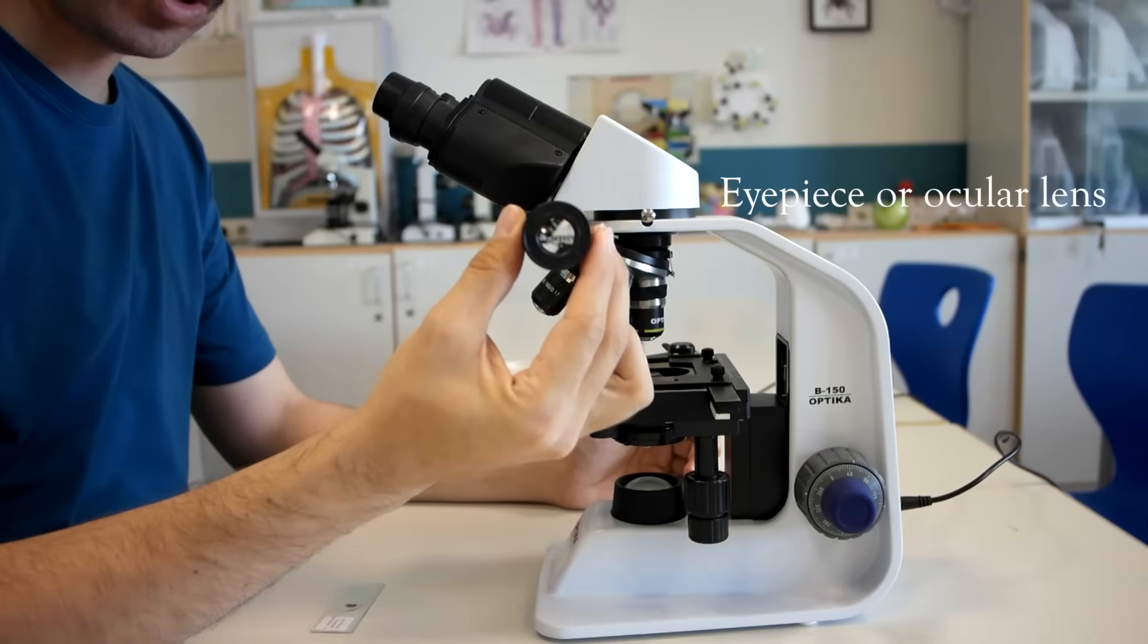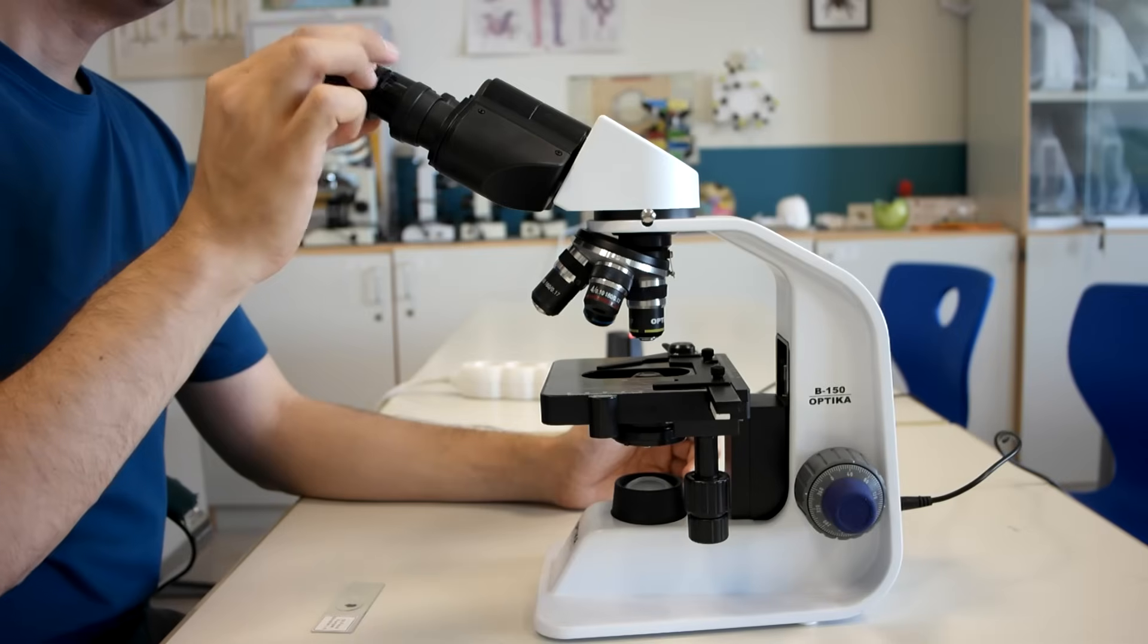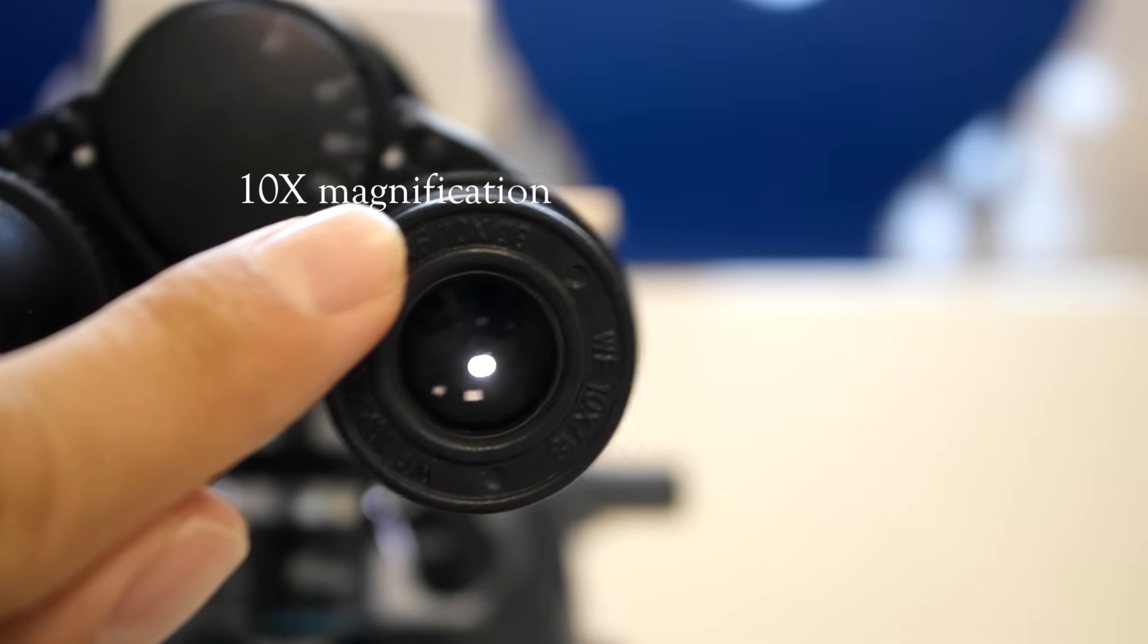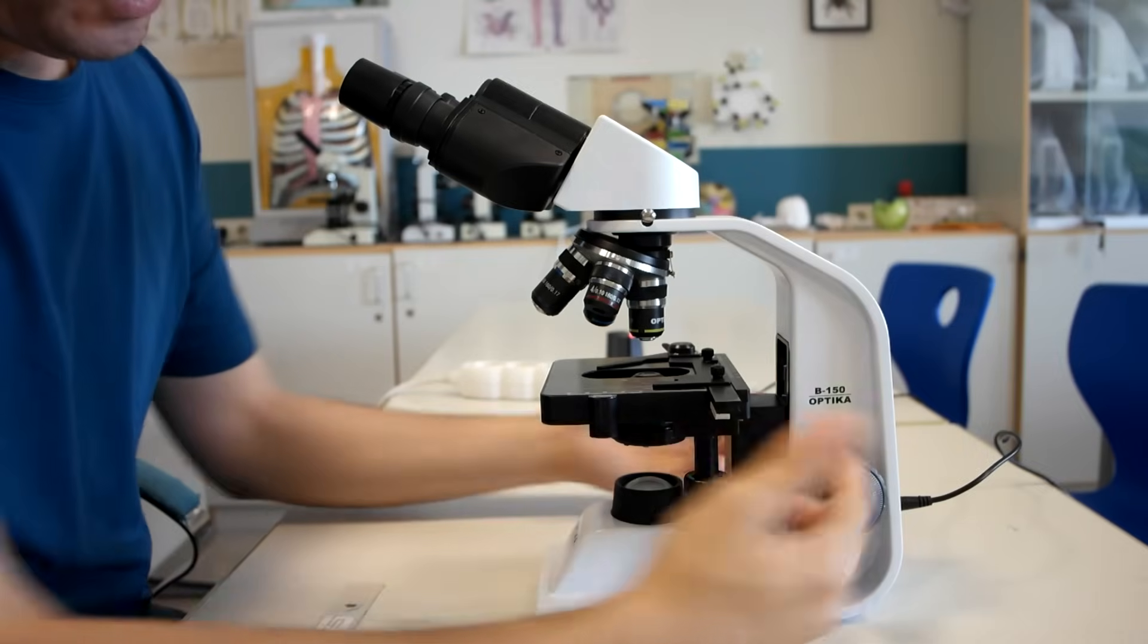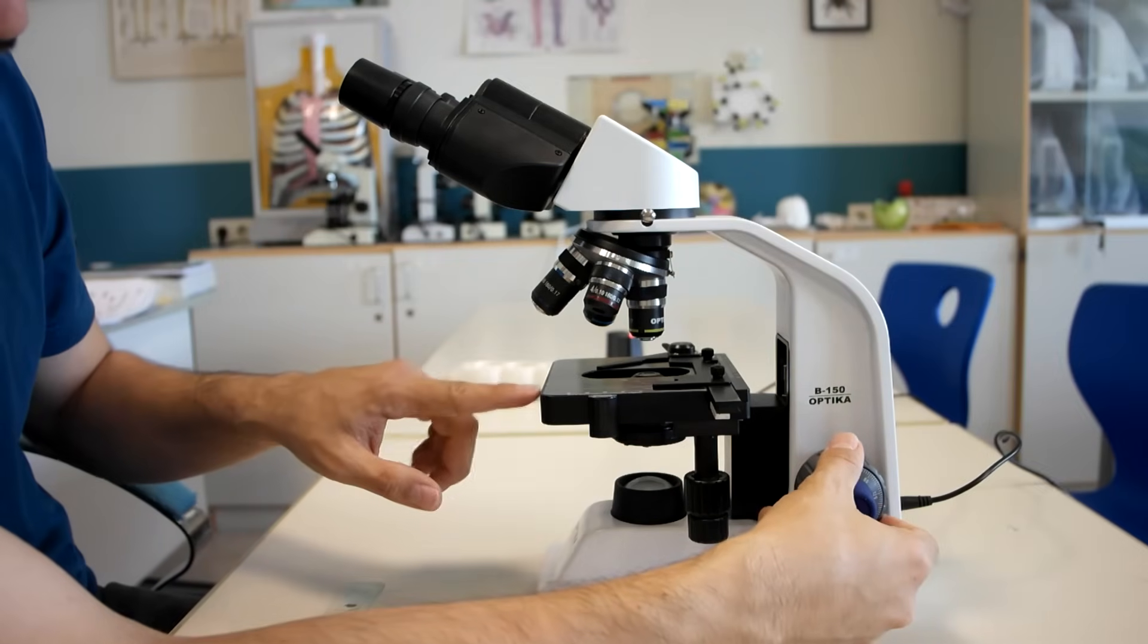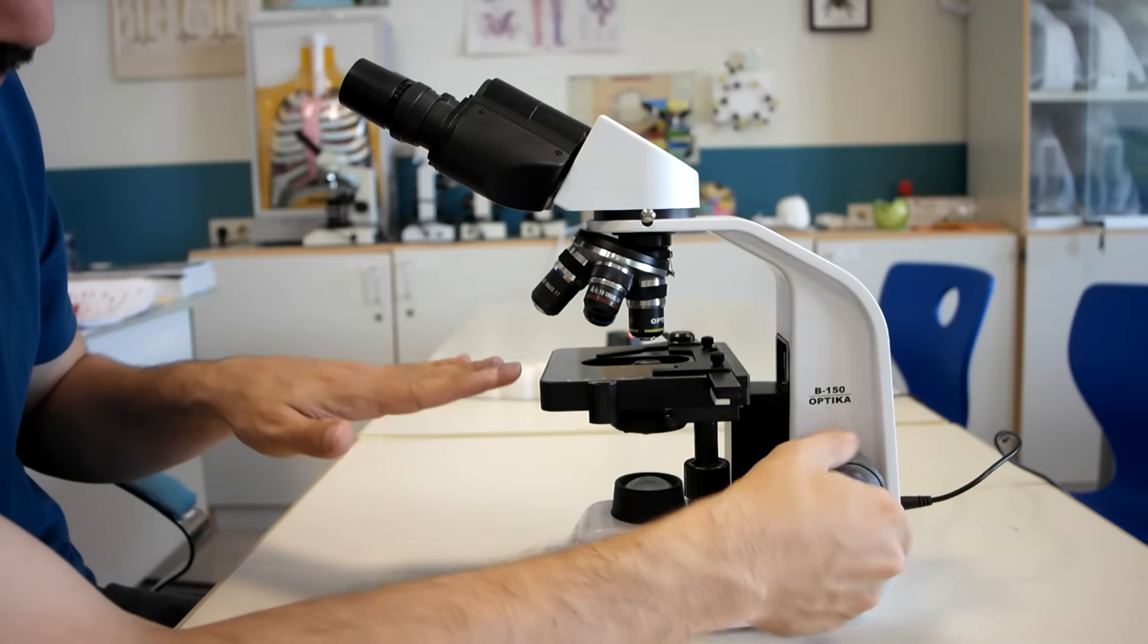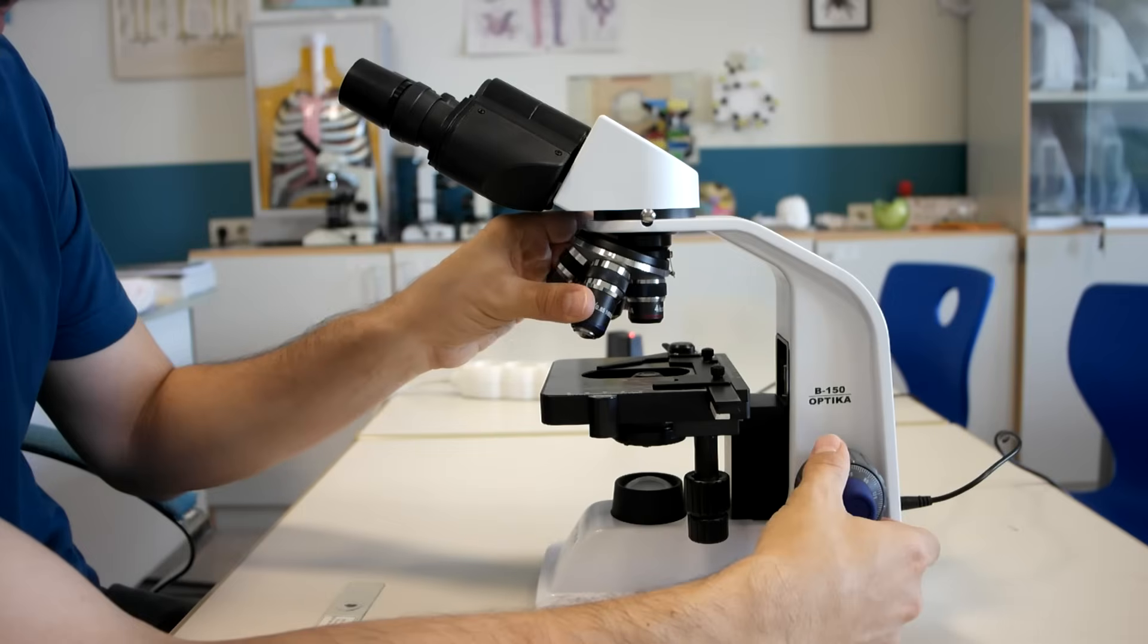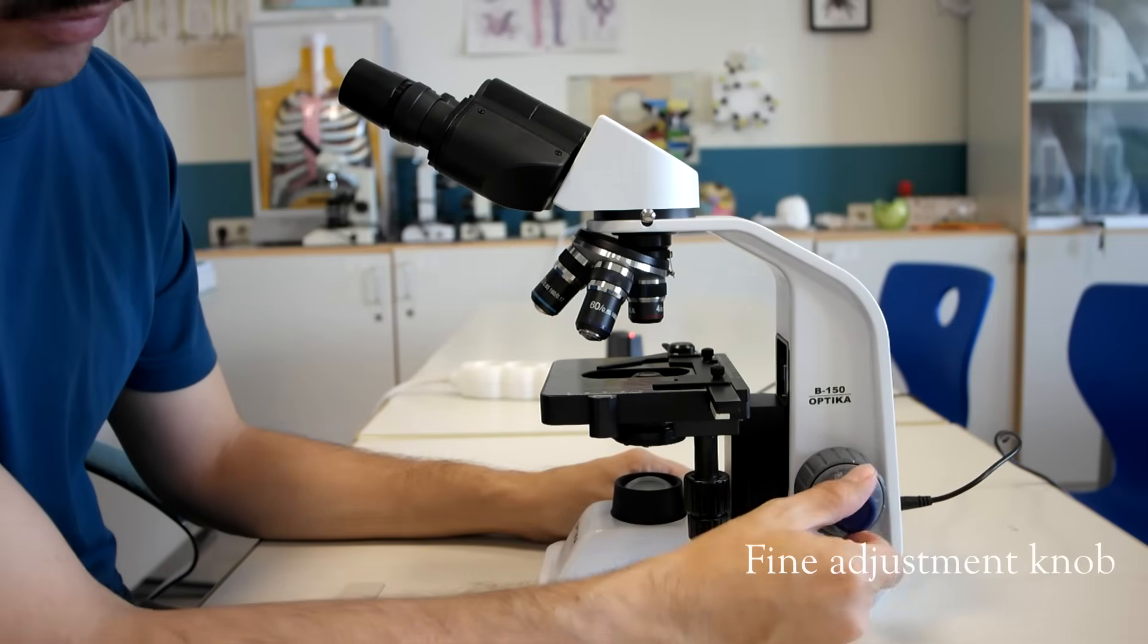Eyepiece lens or ocular lens. This is the coarse adjustment knob. This coarse adjustment knob moves the stage up and down. And this part is the fine adjustment knob.